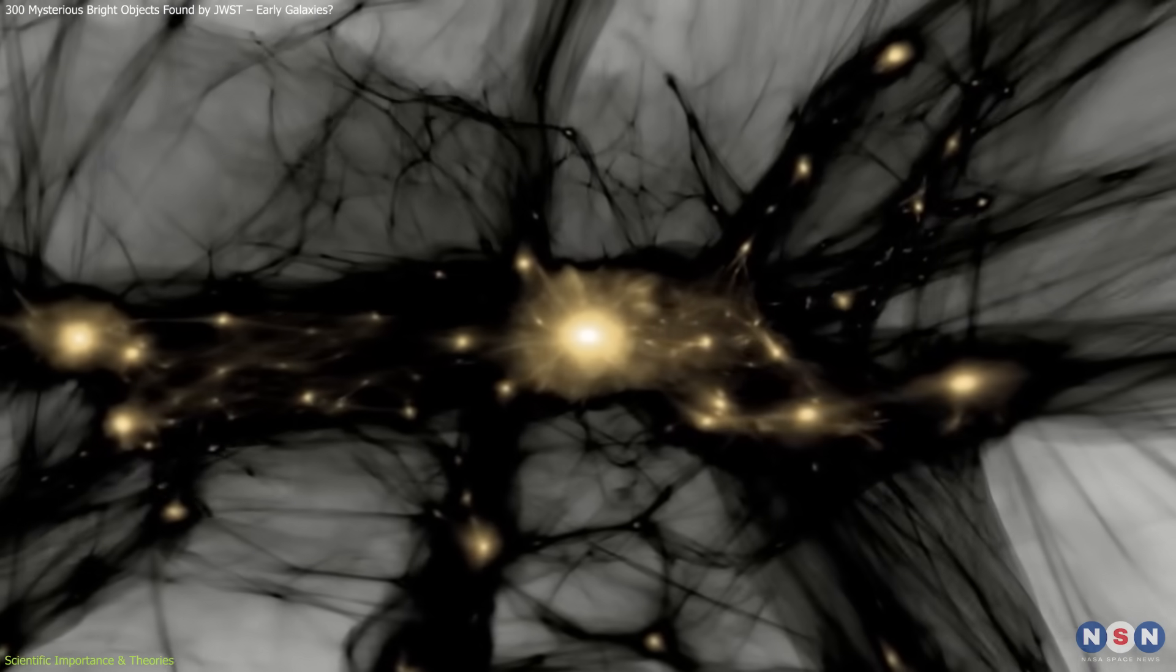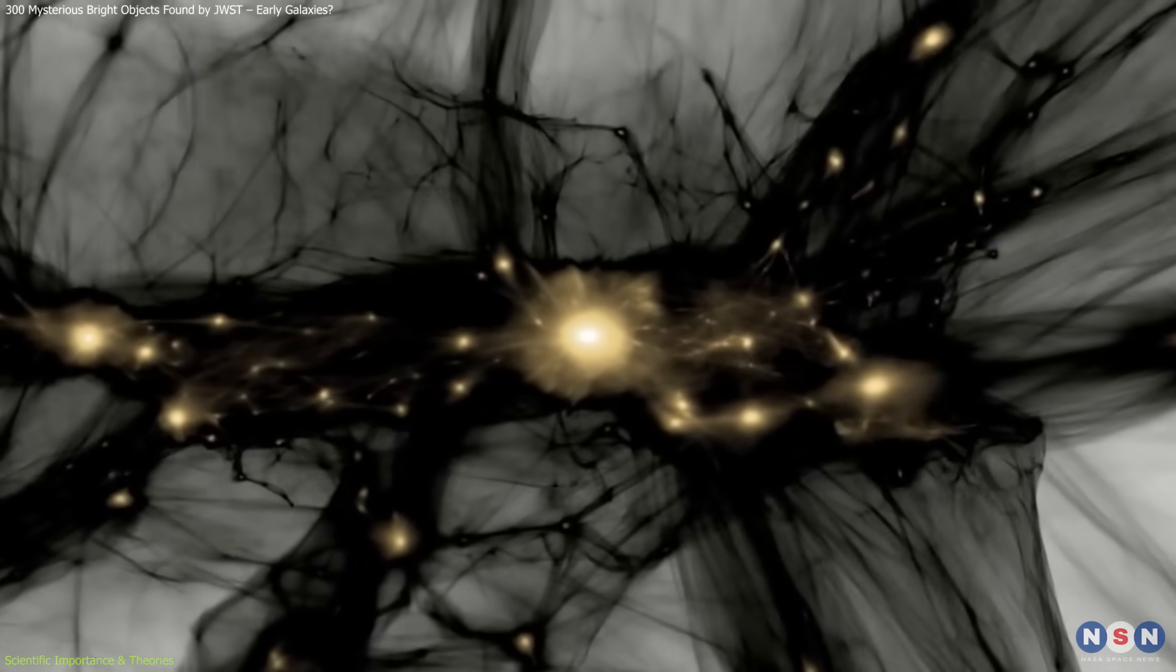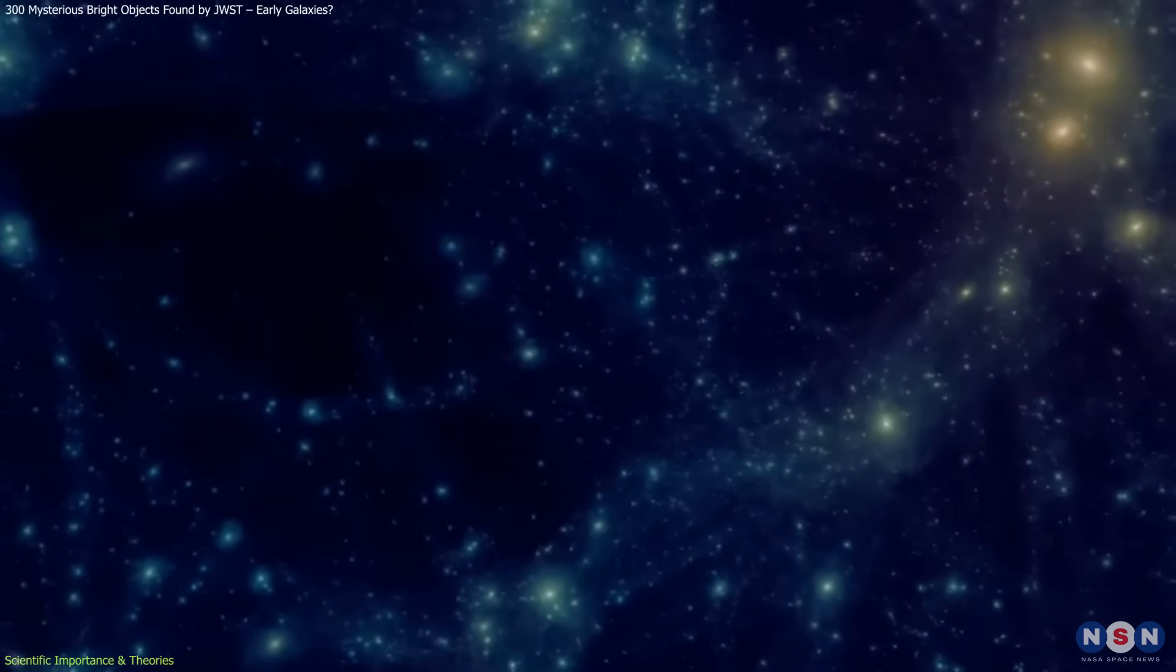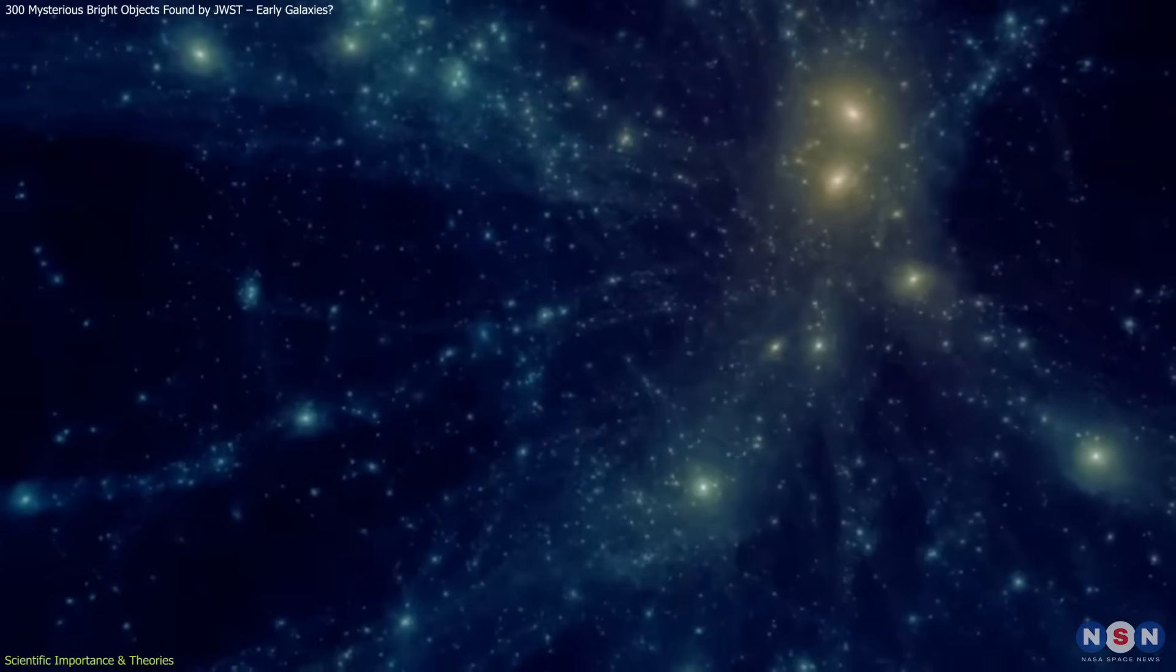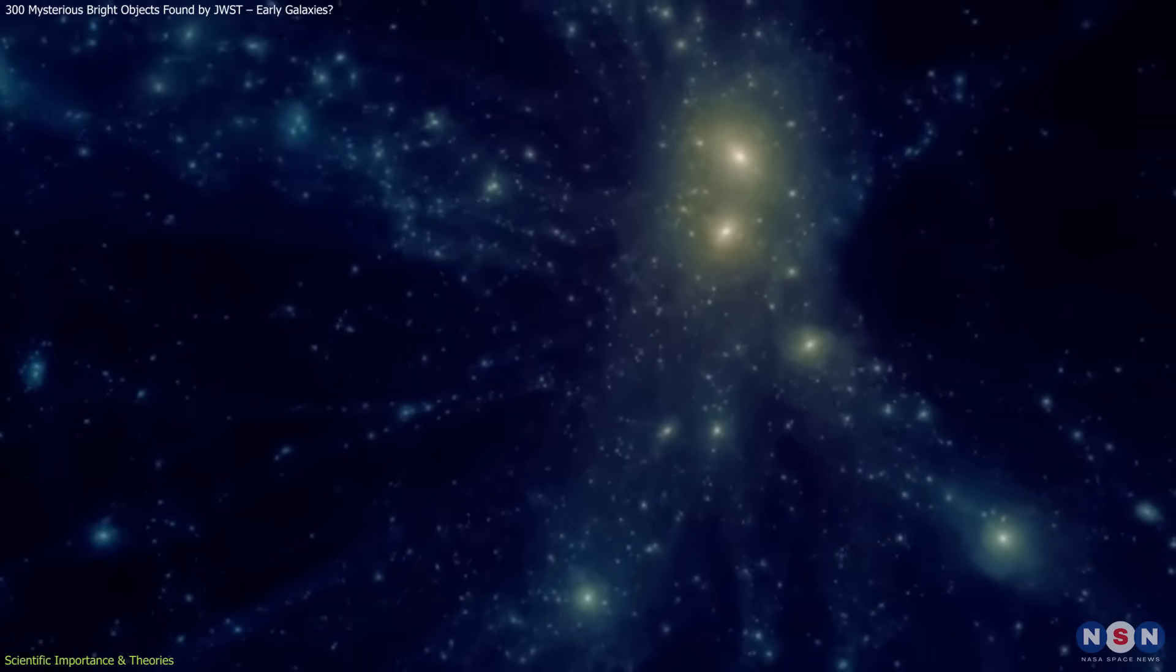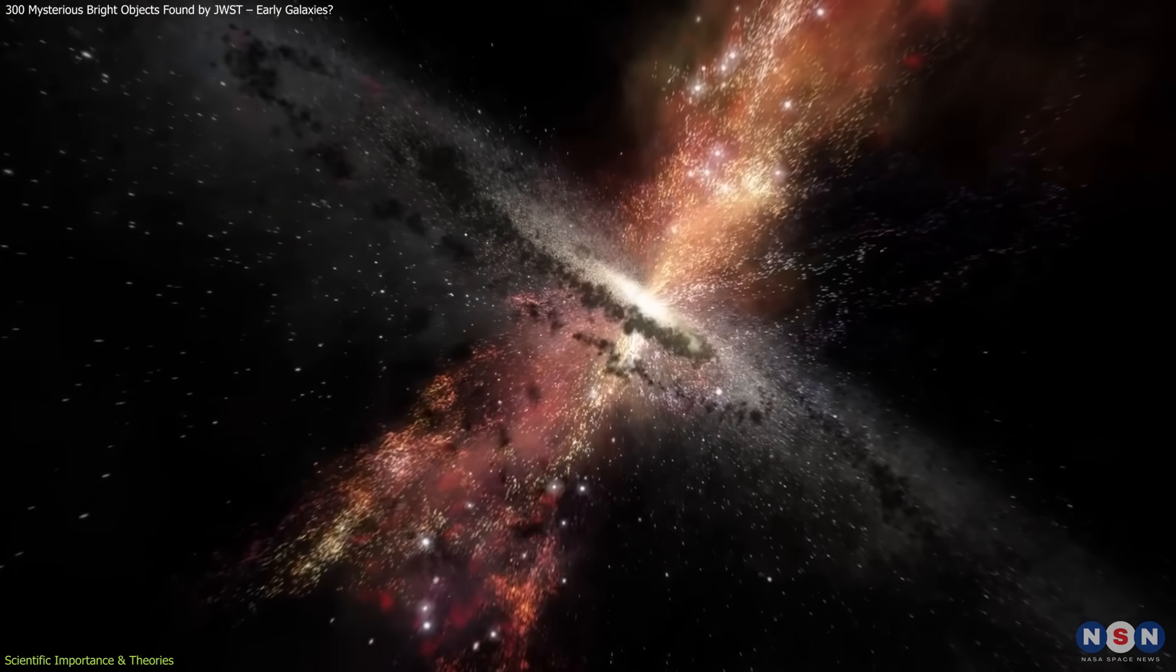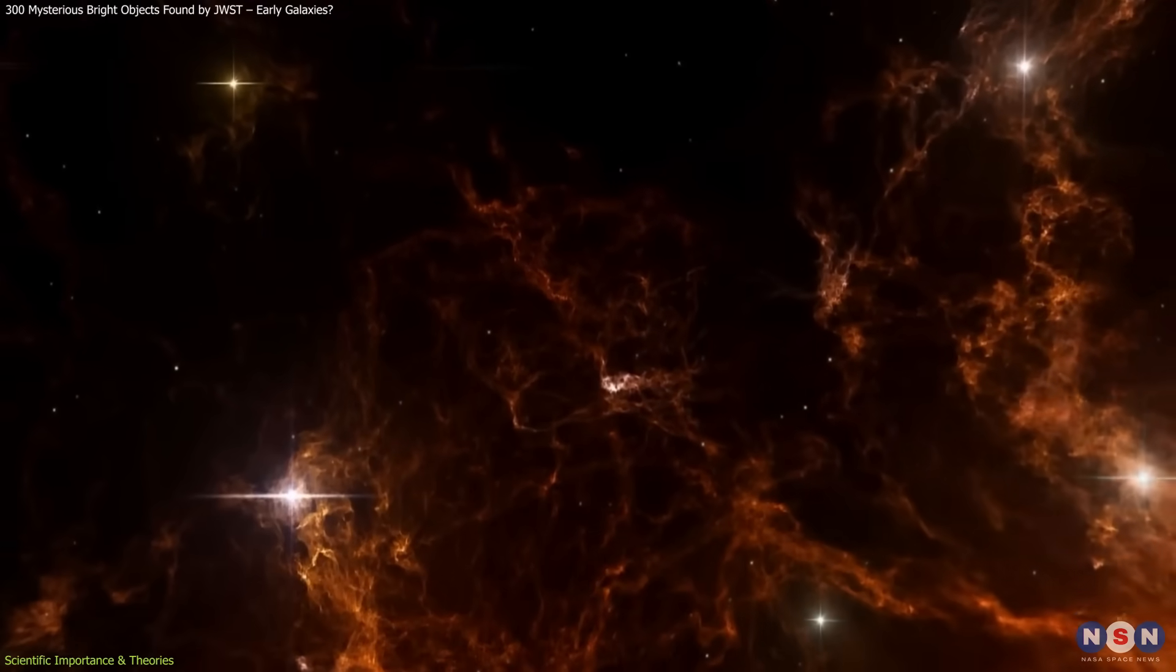One explanation could be that they formed in massive dark matter halos that collapsed early, providing deep gravitational wells to draw in large amounts of gas quickly. This could have triggered intense star formation well before models expect it.